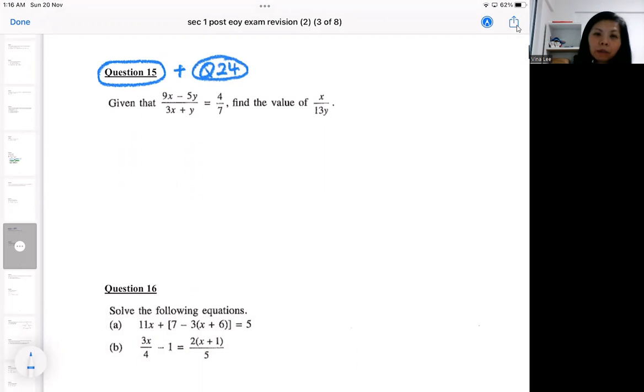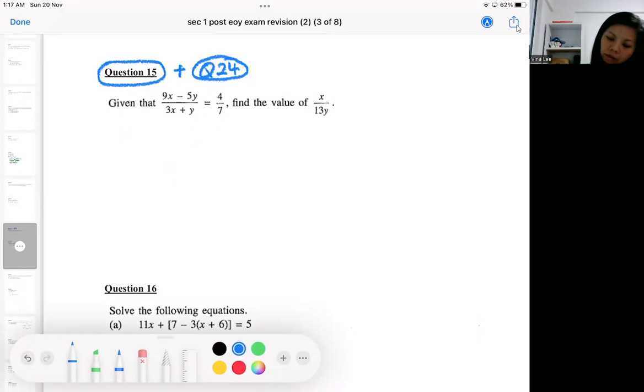Okay, so when you see this kind of ratio question, first of all they give you a fraction equal to a fraction. So the first technique that you are being tested will be your cross multiplication.